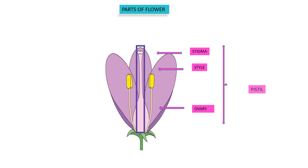Collectively, the stigma, style, and ovary are called the pistil, and a set of pistils is called the gynoecium. Each ovary contains an ovule which has an egg cell. This egg cell and pollen grain help in fertilization.